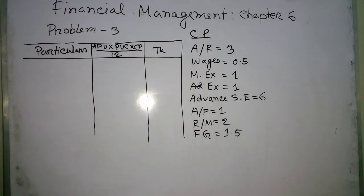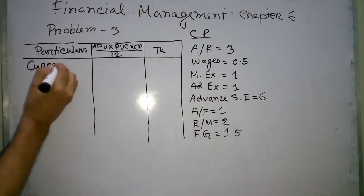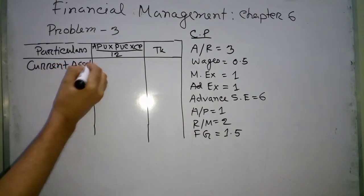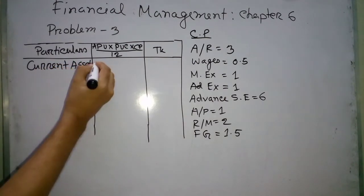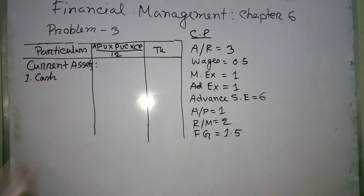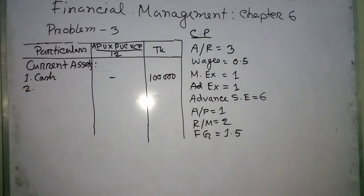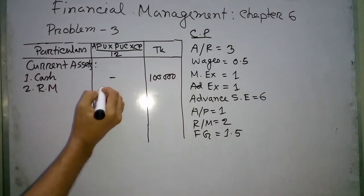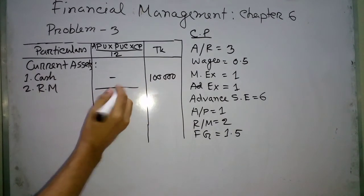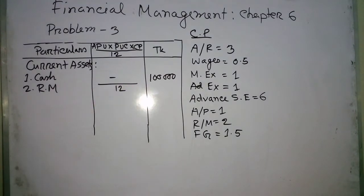Now we will calculate the current assets. Ten percent margin variable. Current assets: cash is one lakh. Number two is raw material — this is the raw material figure.